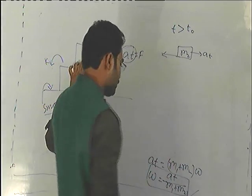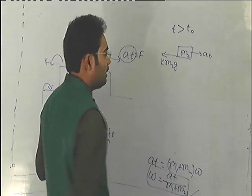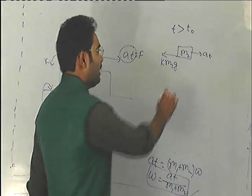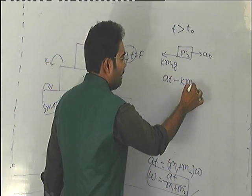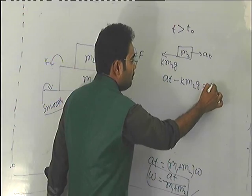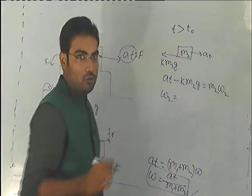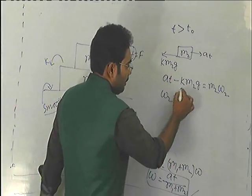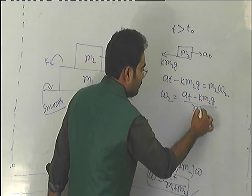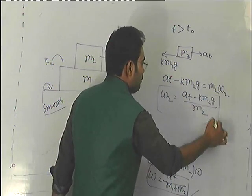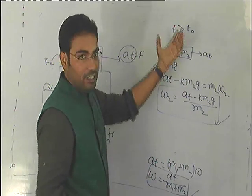In the second part, we consider friction. The friction value is K m2 g. So the acceleration will be: at minus K m2 g equals m2 times w2, where w2 is the acceleration of m2. So w2 equals at minus K m2 g divided by m2. This is the acceleration of m2 after time T0.